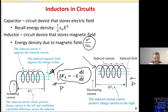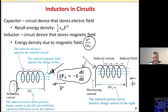So, ΔV_L: if the current is increasing, then dI/dt is positive, meaning ΔV_L would be negative. If dI/dt is decreasing, then ΔV_L would be positive and increasing.